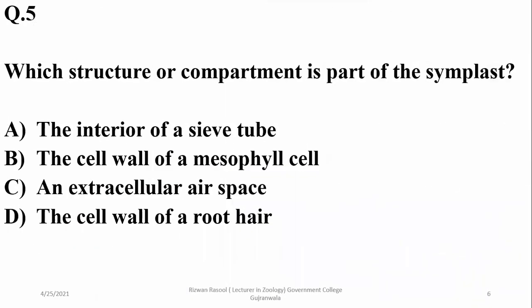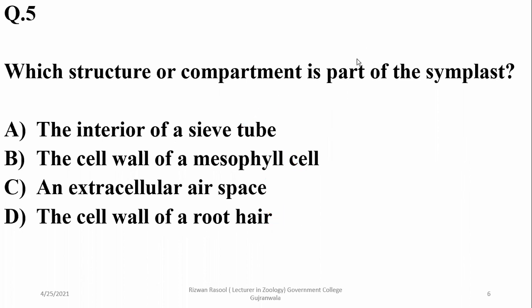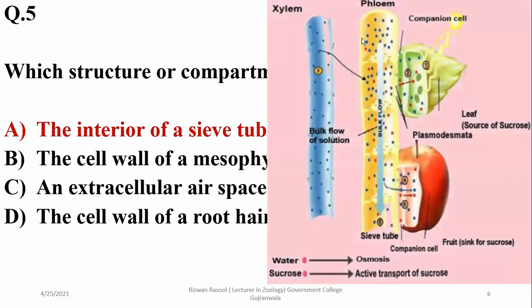Question five: which structure or compartment is part of the apoplast pathway? The cell wall of mesophyll cells, extracellular space, and cell wall of root are involved, but the interior of a sieve tube is directly connected via the symplast pathway. As you can see in this diagram, sieve tube cells are connected with each other through plasmodesmata.